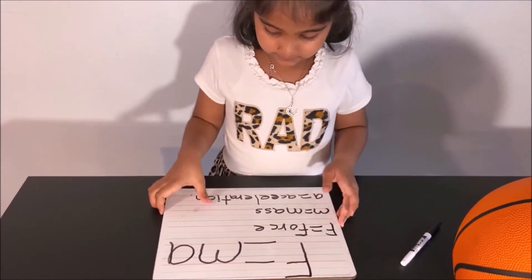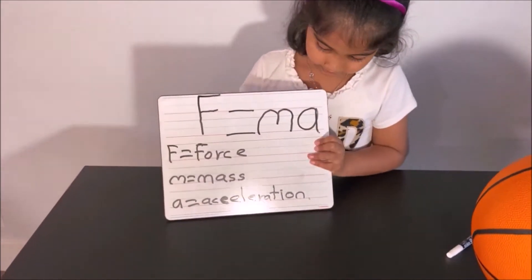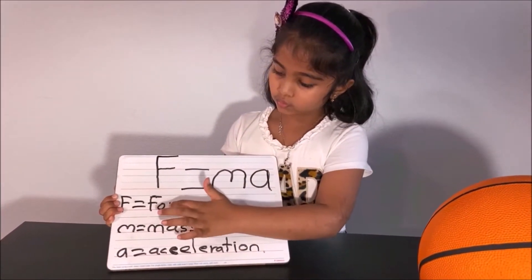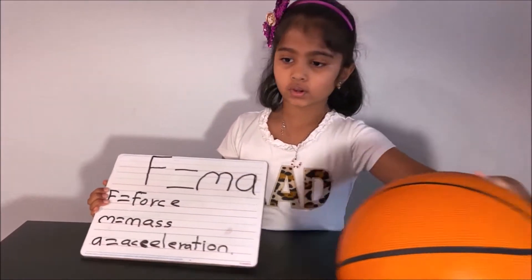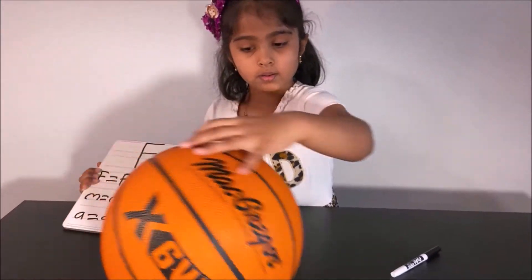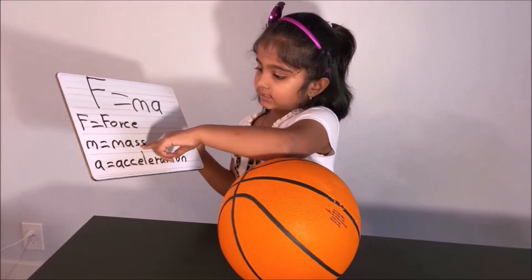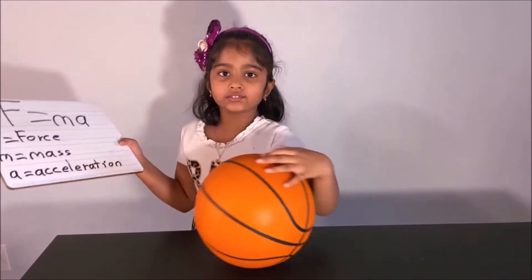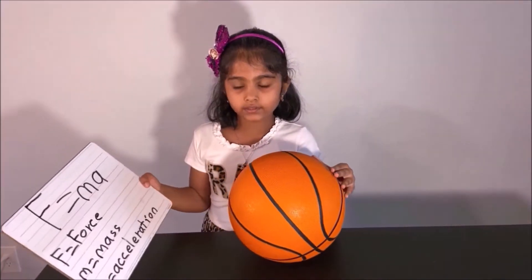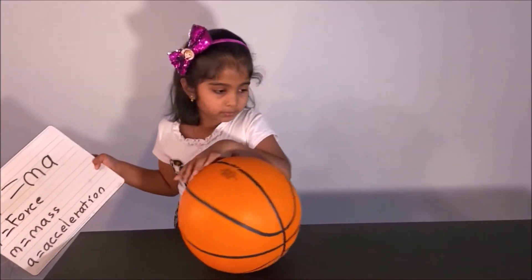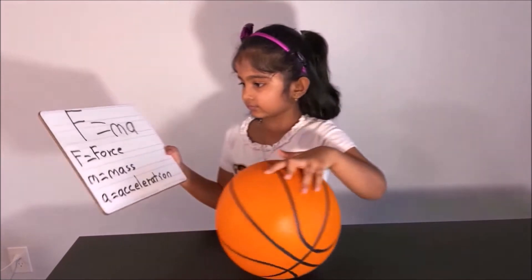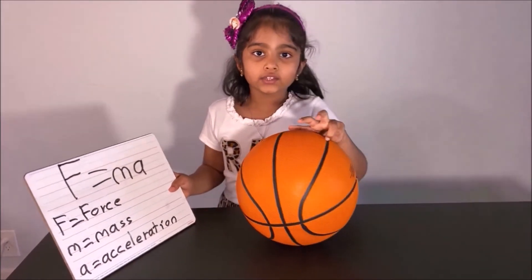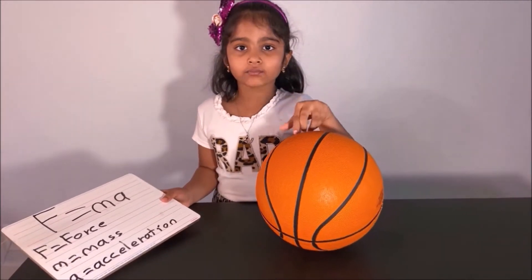And this is how it looks like. F equals MA. F is force — the push or pull. And the mass is how much the basketball weighs. The acceleration is the rate of change of speed, like if I push it fast or if I push it slow. Force equals mass times acceleration.